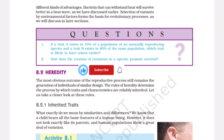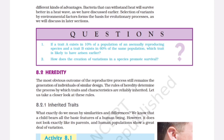Questions. 1. If a trait A exists in 10% of a population of an asexually reproducing species and a trait B exists in 60% of the same population, which trait is likely to have arisen earlier? 2. How does the creation of variations in a species promote survival?